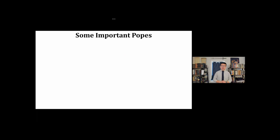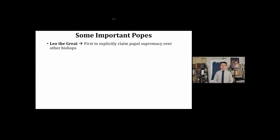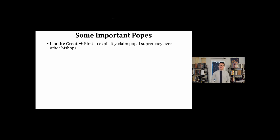Over the course of this video lecture series, we have looked at the lives and contributions of various popes who have deeply shaped the history of the Christian Church. Leo the Great was the first bishop of Rome to explicitly claim papal supremacy over other bishops. This does not in itself mean that the idea of the papacy did not exist before Leo — the Catholic Church will tell you it did — but this is the first really explicit assertion that Leo has legitimate authority over other bishops as Peter's successor.